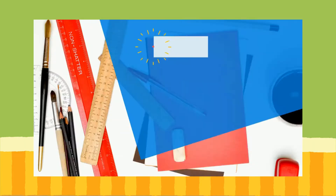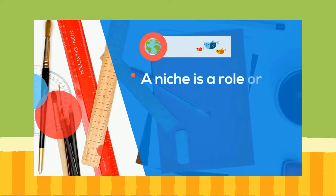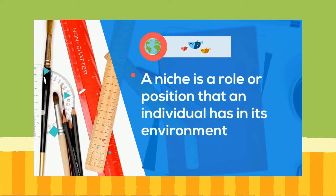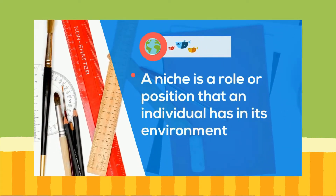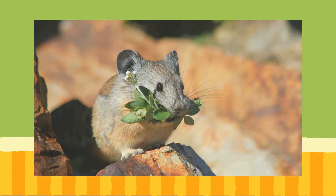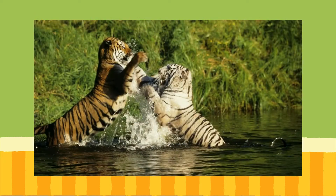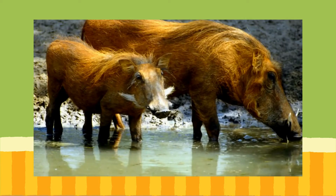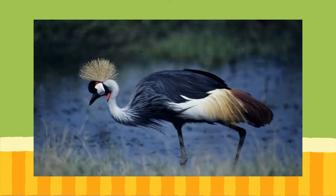A niche is the role or position that an individual has in its environment. A niche may also involve what the individual eats, how it interacts with other living things, and also how it interacts with the non-living factors. Without ecological niches, there would be less diversity and the ecosystem would not be in balance.